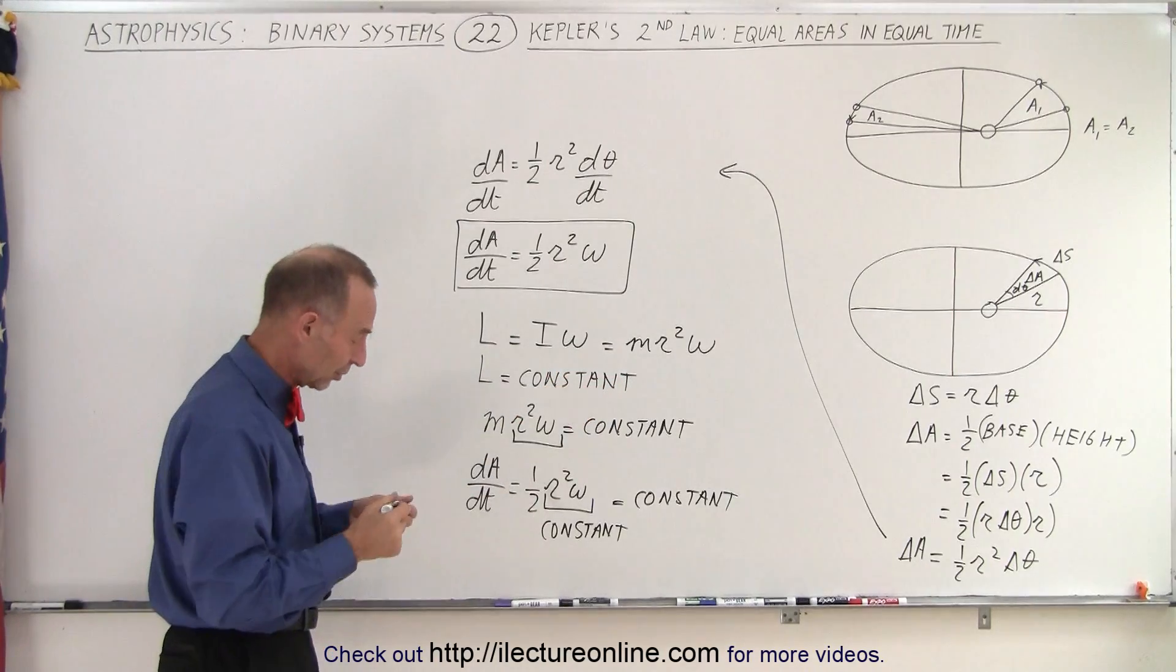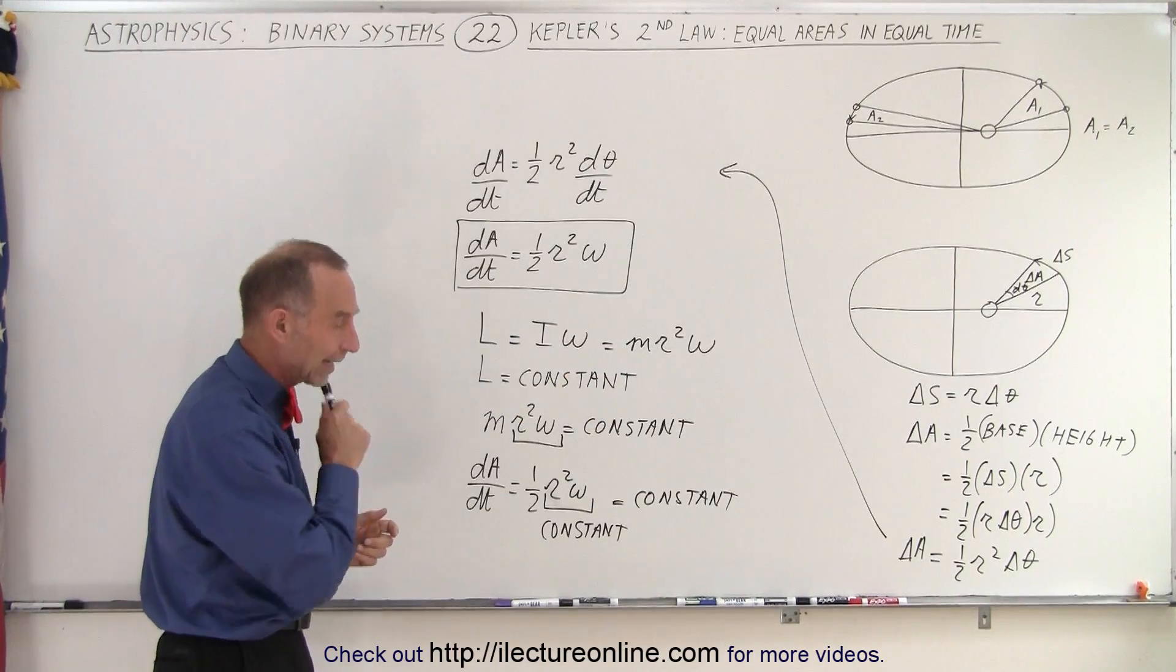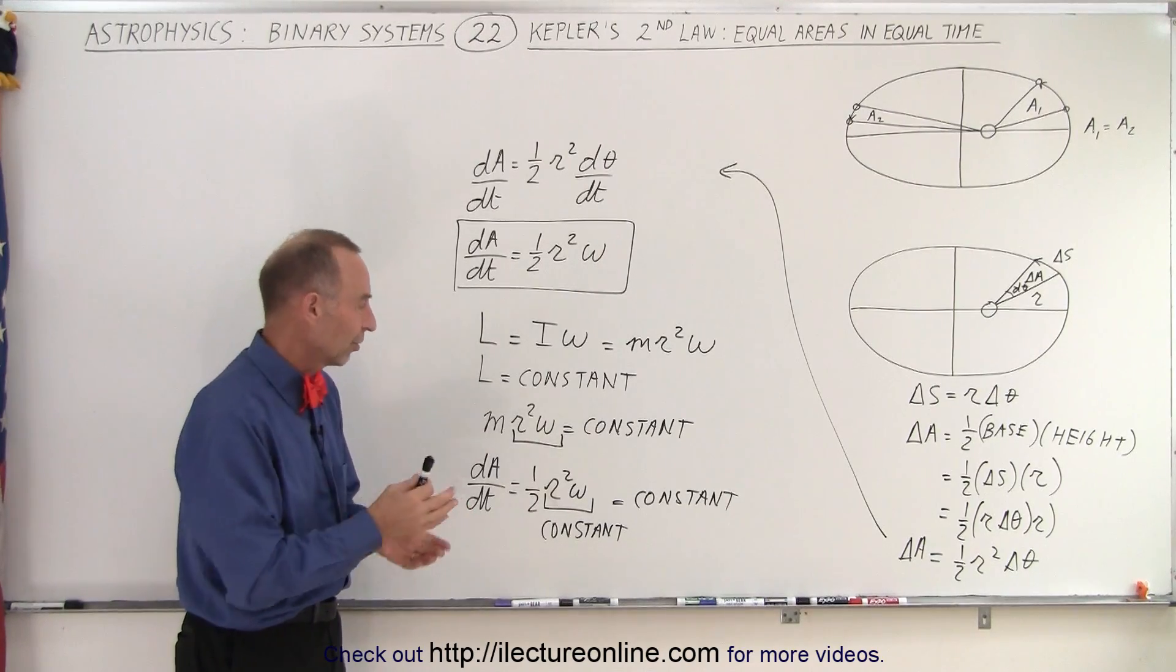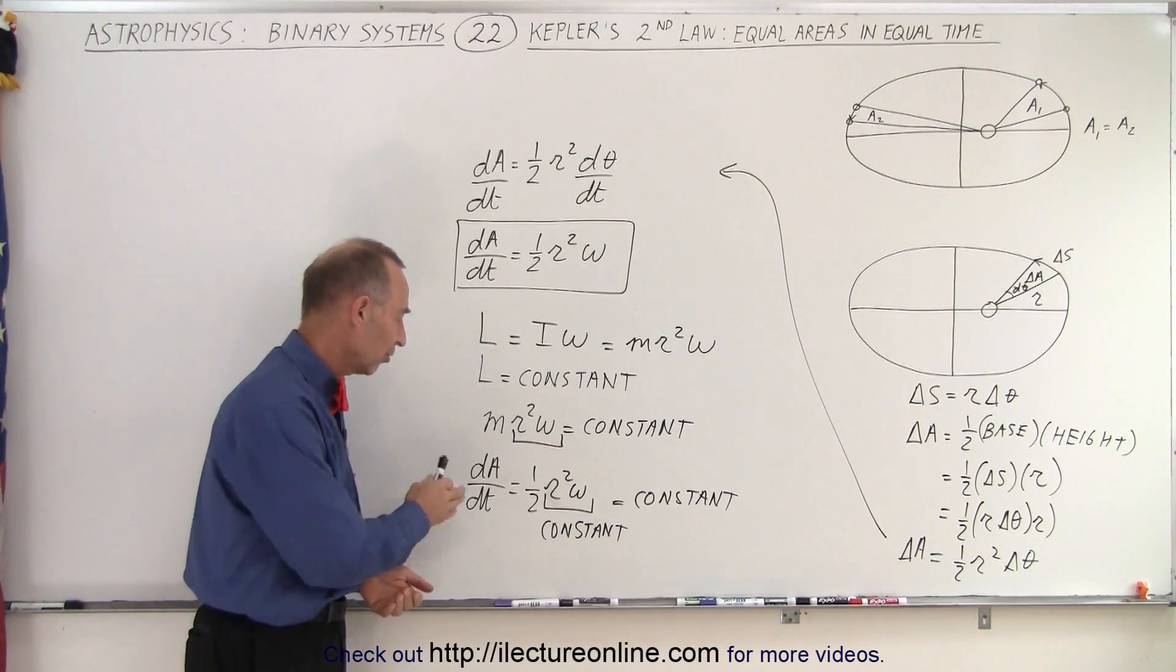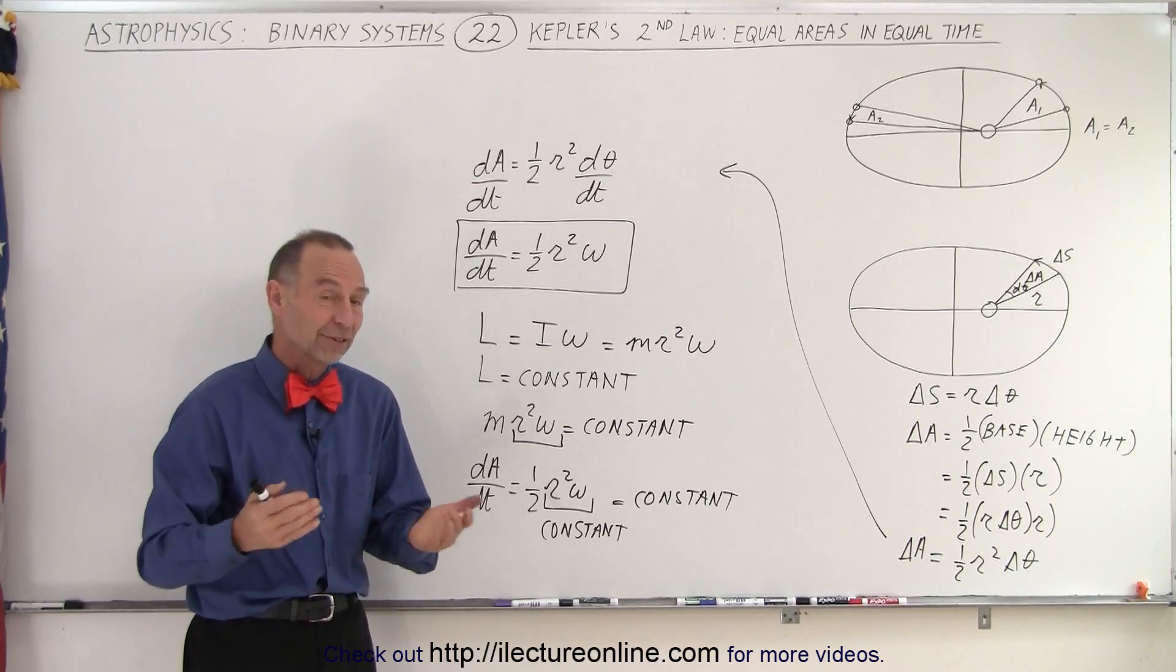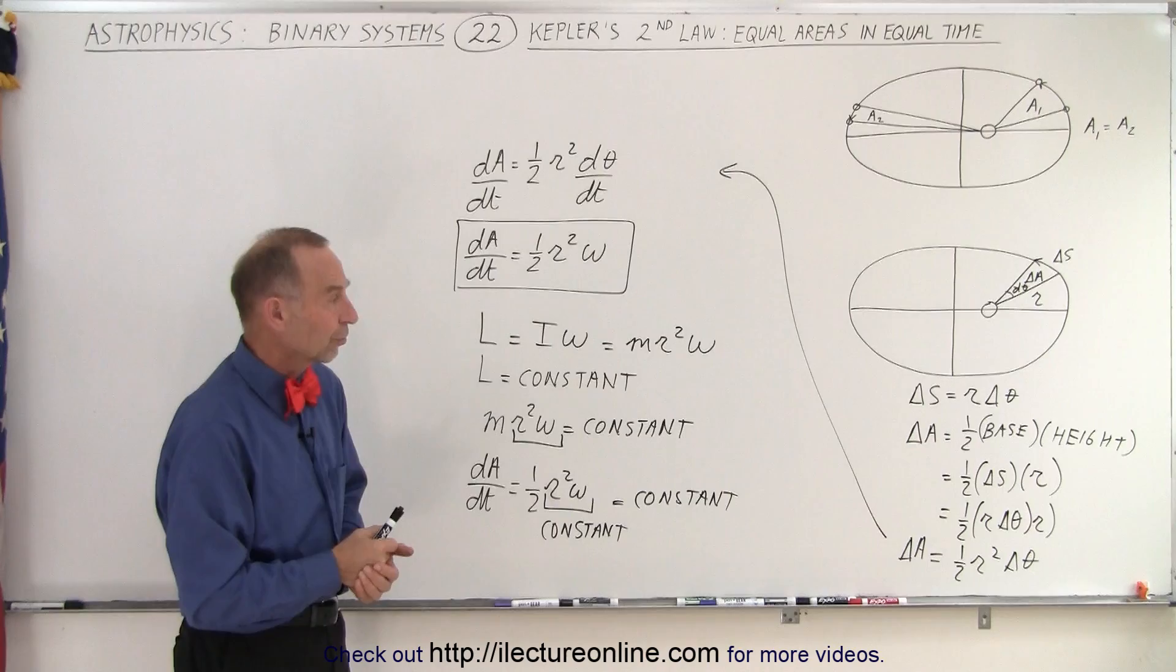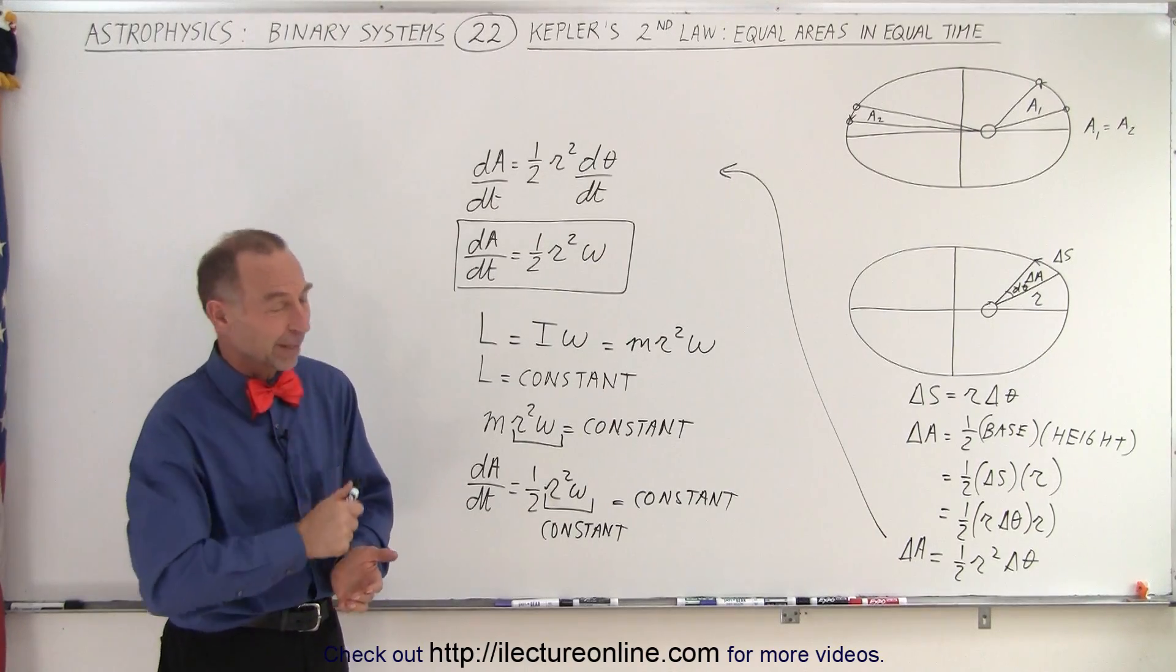The equal areas in equal time is a solid concept that is supported by the mathematical and physical concept of how objects move around in circles or ellipses, and that is how it's done.